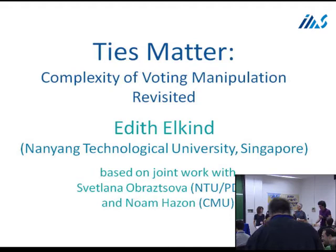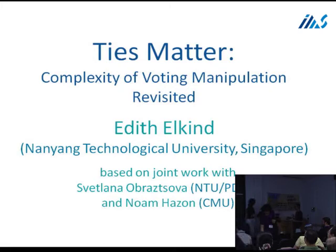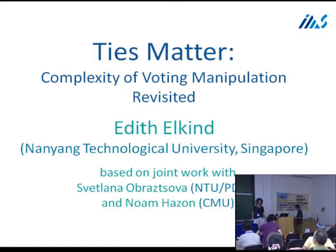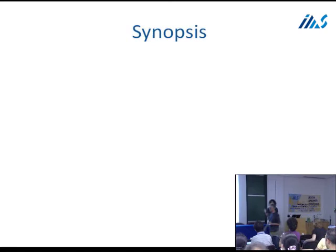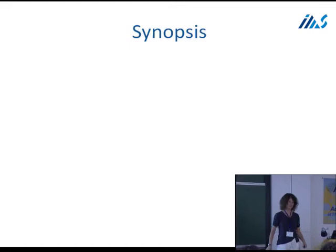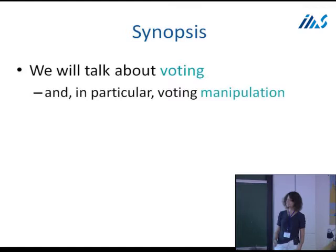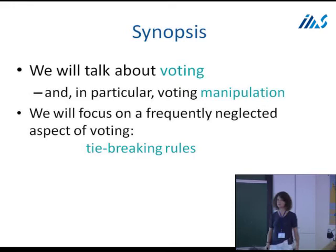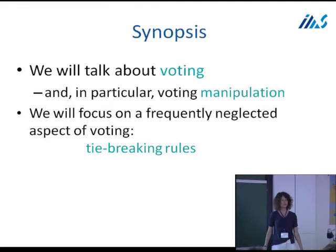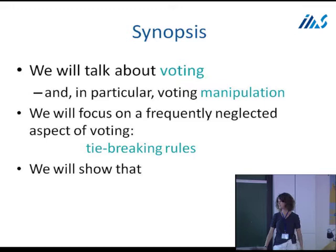This talk by Edith Therkin is about the complexity of voting manipulation with respect to ties. Thanks for coming. I know it's been a long day, so let me give you a brief overview so you can fall asleep right after. The summary comes at the beginning and I'll repeat it at the end - when you hear the same verse, that's time to wake up. We'll talk about voting and collective decision-making, specifically voting manipulation - how voters can lie about their preferences to improve the outcome for themselves. Even more specifically, we focus on tie-breaking rules, an aspect not properly addressed in previous literature. Ties actually matter.